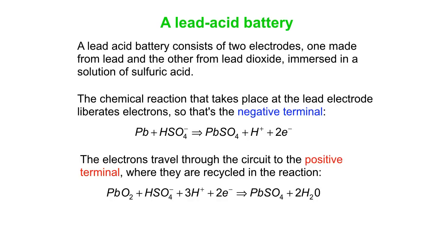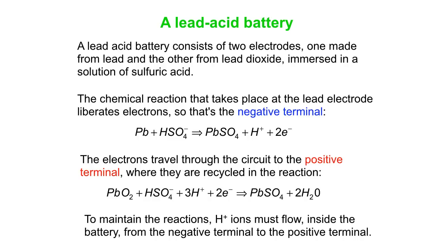And then at the other terminal, you get this happening. This is the PbO2 electrode. Combine that with some more HSO4-, three H+ ions, the two electrons that come back from the external circuit. And you bind those up in a couple of water molecules and some more PbSO4. And the critical thing about this is that to maintain these reactions, H+ ions have to flow inside the battery from the negative terminal to the positive terminal.